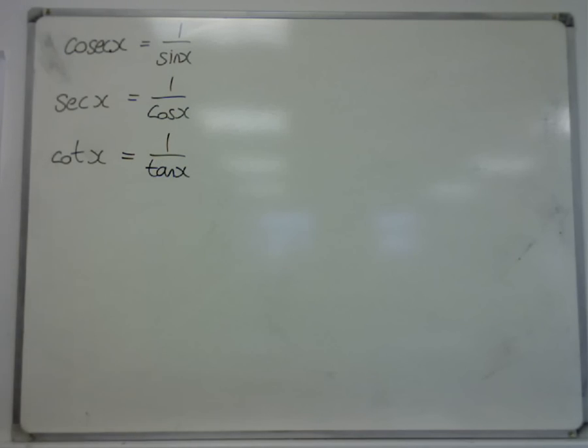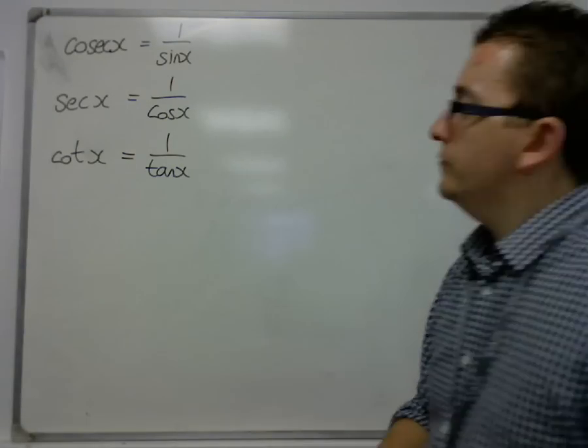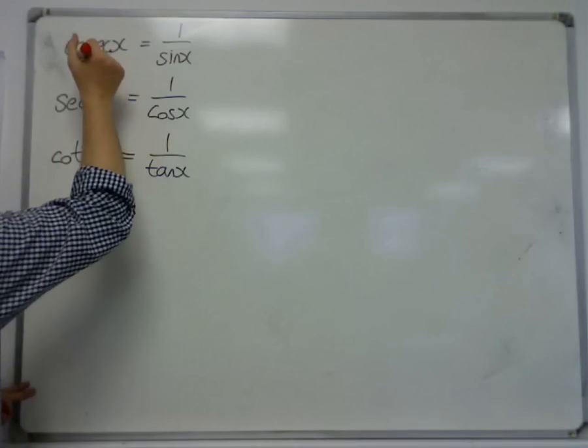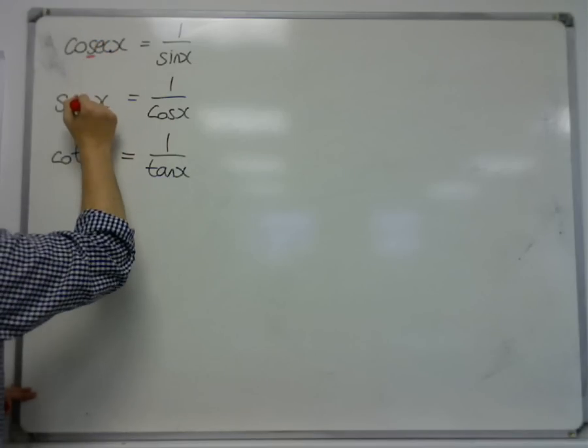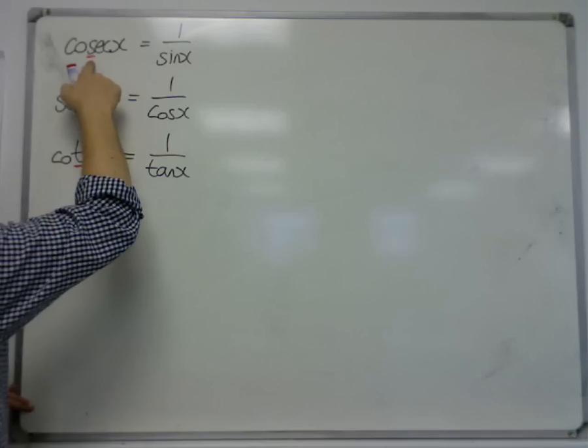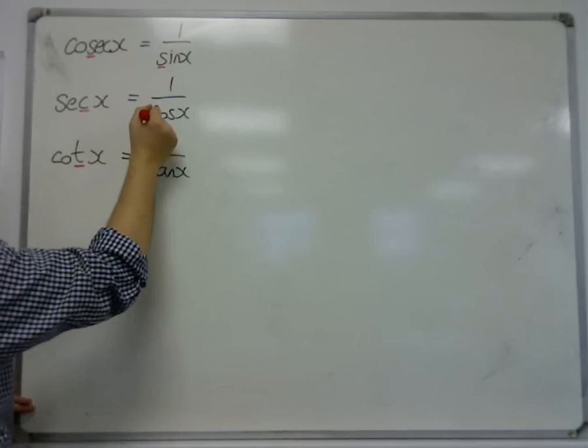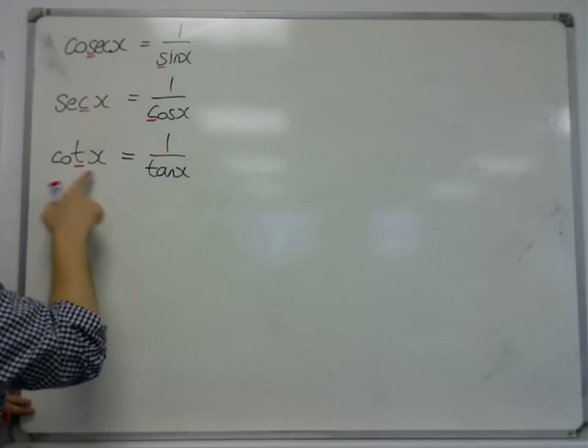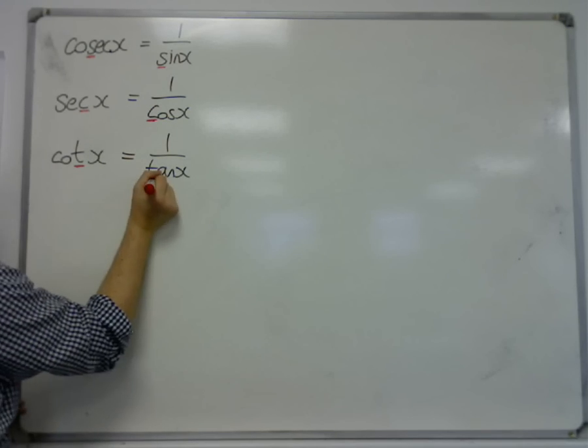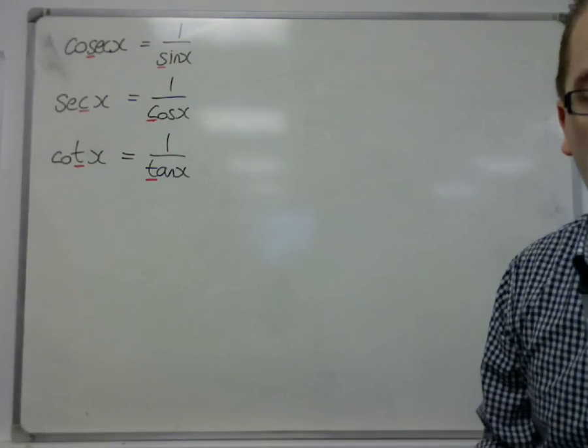So these are three that you need to remember. And the way to remember them is just by identifying the third letter. Cosec, third letter is s for sine. Sec, the third letter is c for cosine. Cot, the third letter is t for tan. So that's a way to remember which is which.